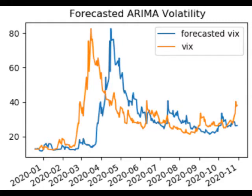The MA part indicates that the regression error is actually a linear combination of error terms whose values occurred contemporaneously and at various times in the past. The I, for integrated, indicates that the data values have been replaced with the difference between their values and the previous values, and this differencing process may have been performed more than once. The purpose of each of these features is to make the model fit the data as well as possible.